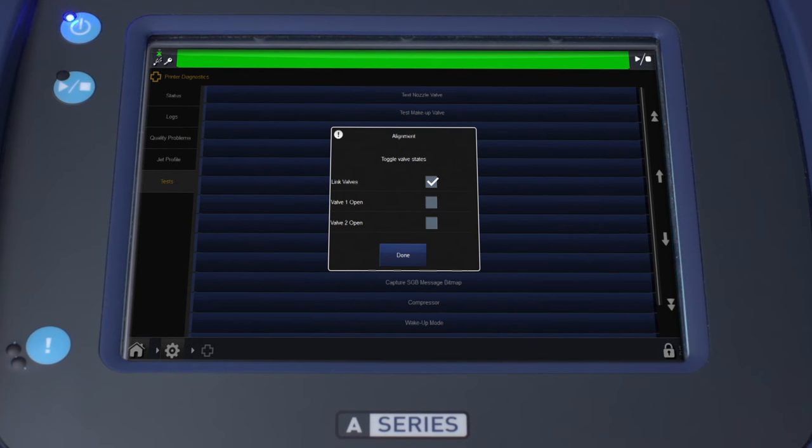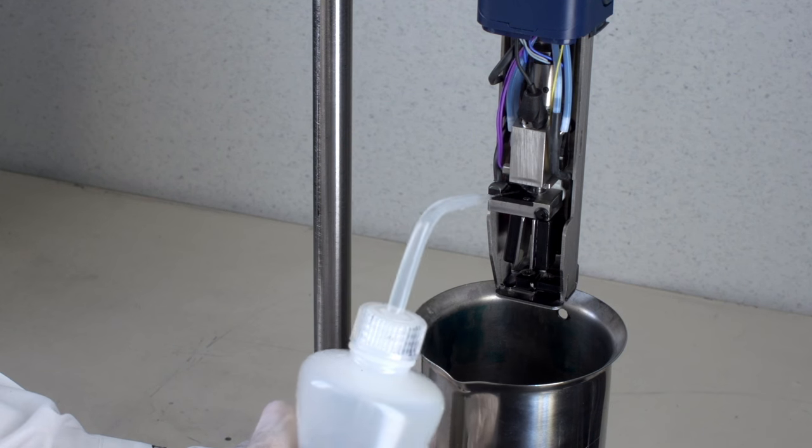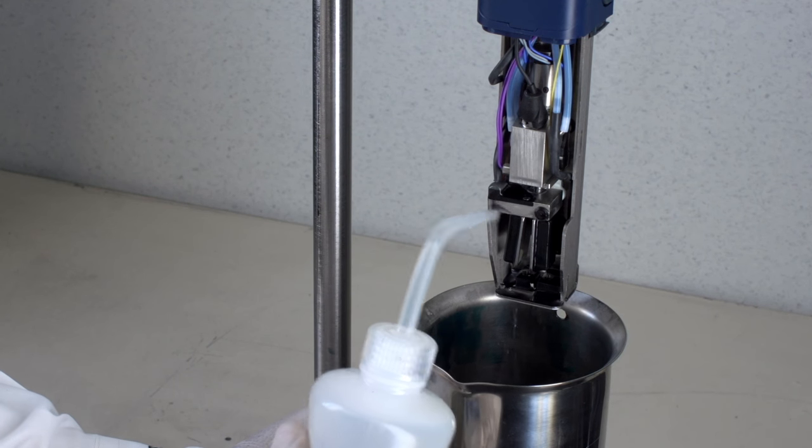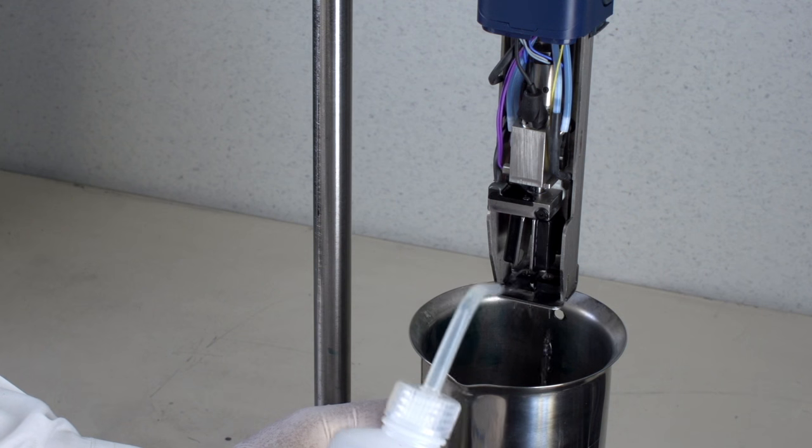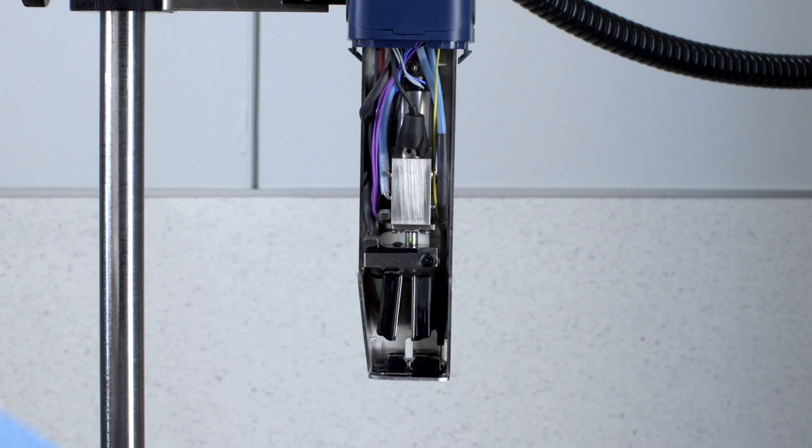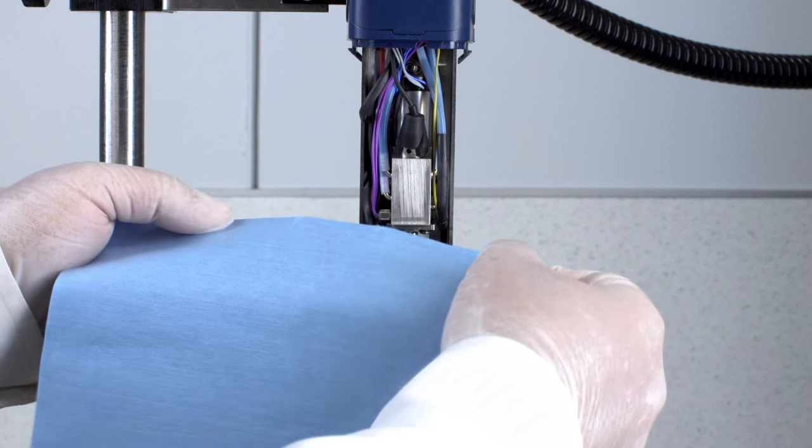On the front panel, press Done to stop the ink stream. To finish, once again thoroughly clean everything on the printhead from the drop generator down to the gutter, drying using the lint-free wipe.